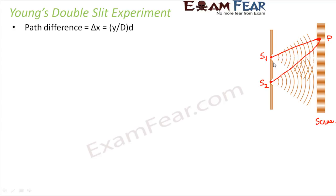To calculate the path difference between these two waves, S2P is greater than S1P, so this path is longer. If you draw a perpendicular, you can see that S1P equals a certain distance, and the extra distance is the path difference, which is generally denoted by delta x.